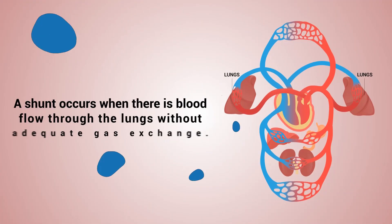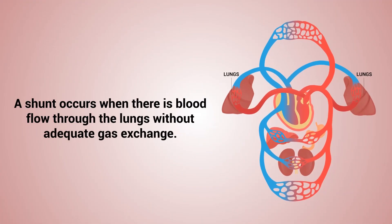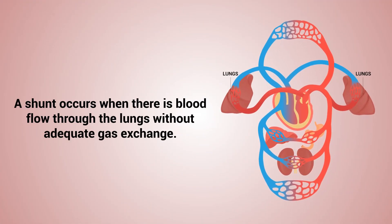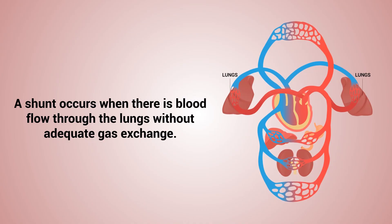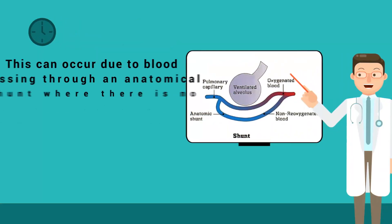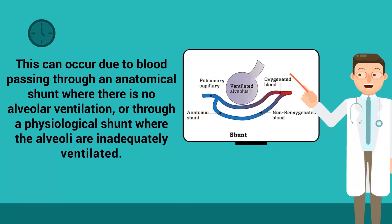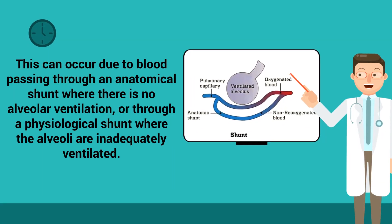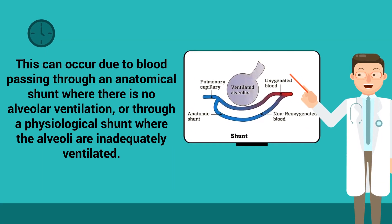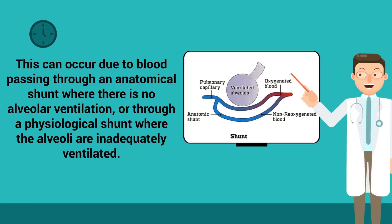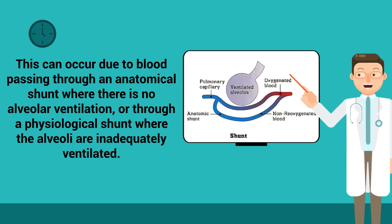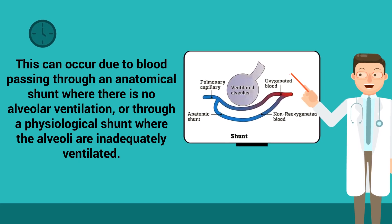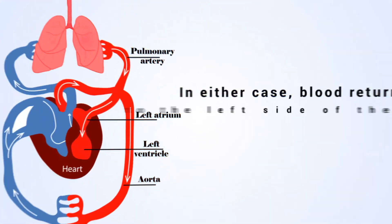A shunt occurs when there is blood flow through the lungs without adequate gas exchange. This can occur due to blood passing through an anatomical shunt, where there is no alveolar ventilation, or through a physiological shunt, where the alveoli are inadequately ventilated.